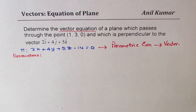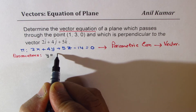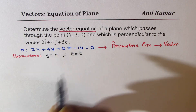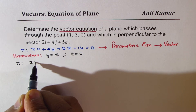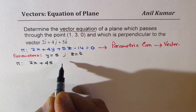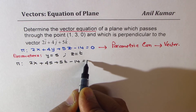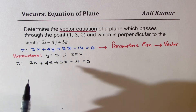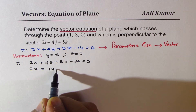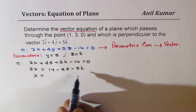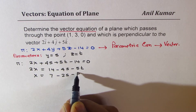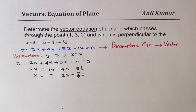To get the parametric equation, let us define parameters s and t. Let y equal s and z equal t. Substituting into the plane equation gives 2x plus 4s plus 5t minus 14 equals 0. Isolating x: 2x equals 14 minus 4s minus 5t, so x equals 7 minus 2s minus (5/2)t.